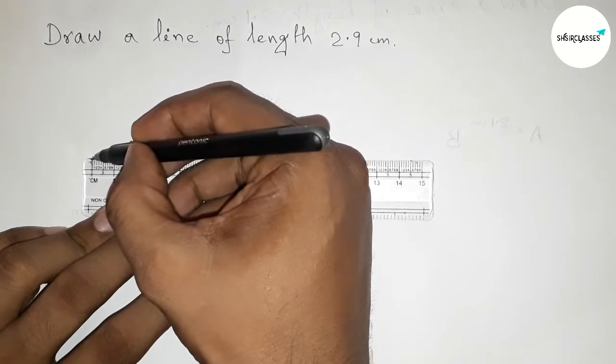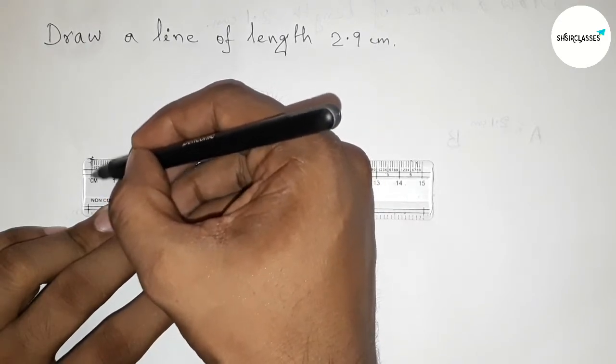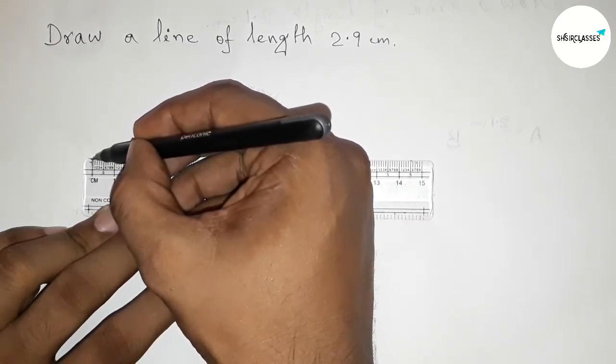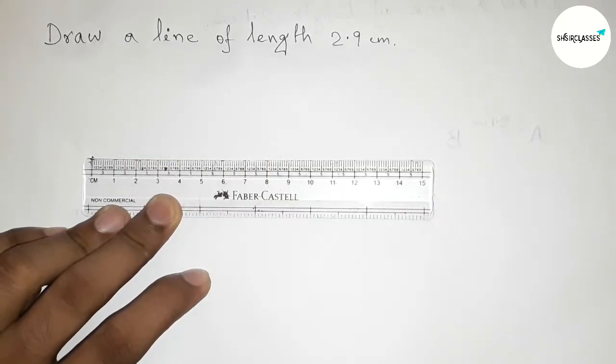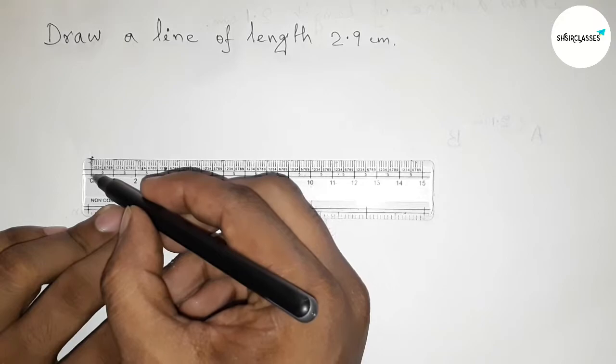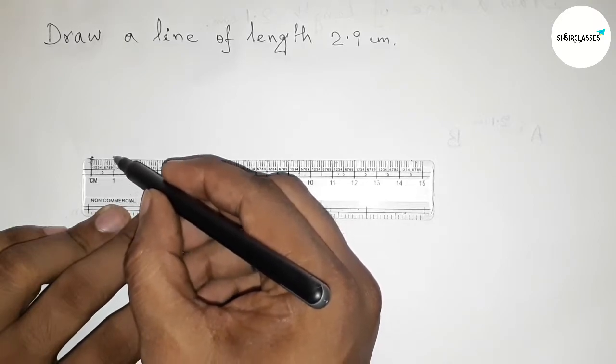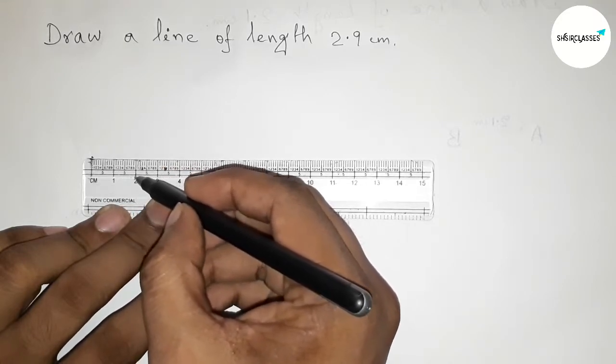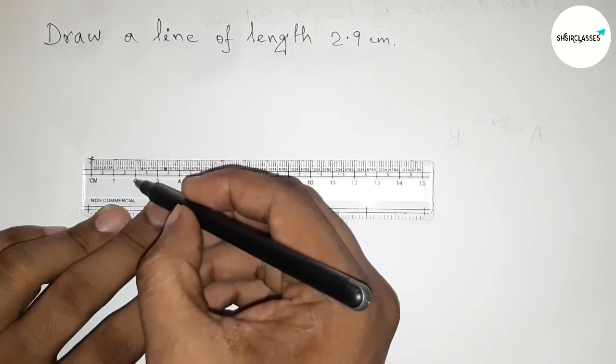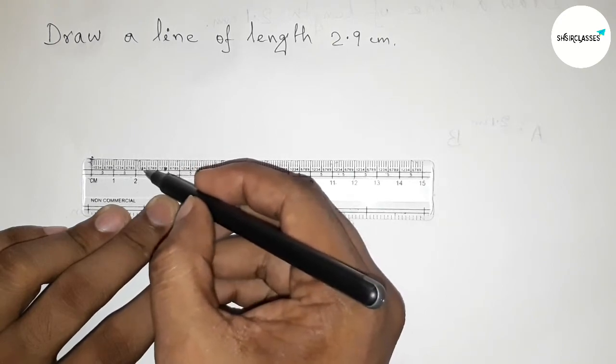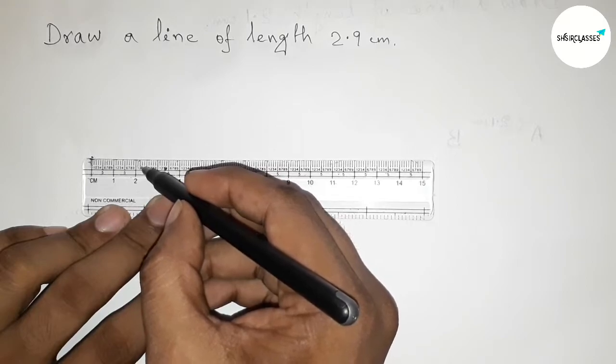Zero, so first mark this. This is starting zero. Now measure the length 2.9 centimeter. So this is zero, this is one centimeter, this is two centimeter, and this is 2.1. So this is 2.1, 2.2, 2.3, 2.4, 2.5, 2.6, 2.7, 2.8, 2.9.